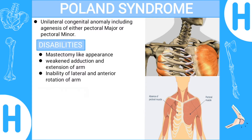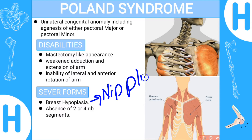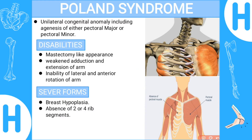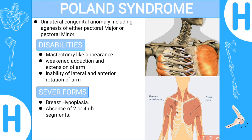The severe forms of Poland Syndrome: the first one is breast hypoplasia, a condition in which nipples are absent. The second severe form is absence of two or four rib segments, which can lead to lung herniation — the lung will be herniated at the site of the absent rib segments.